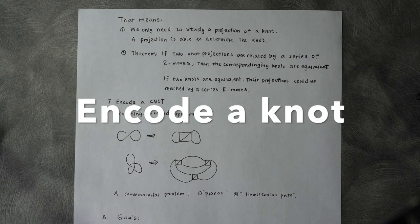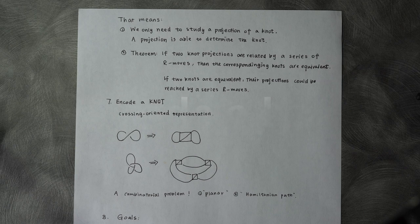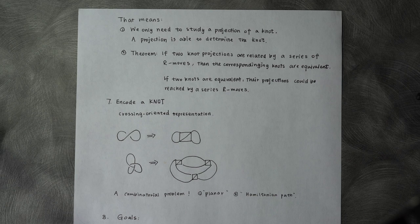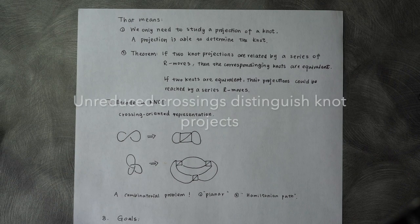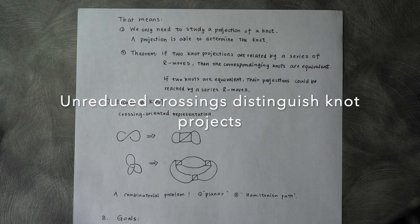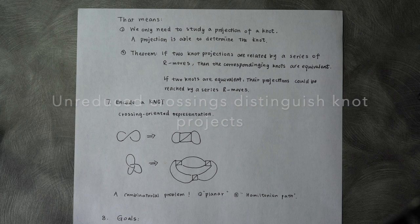It's clear that it's enough to study the knot projections, and for knot projection, what do we care the most? We have noticed that the inner reduced crossings are the key point that distinguishes different knot classes.